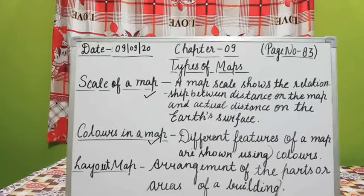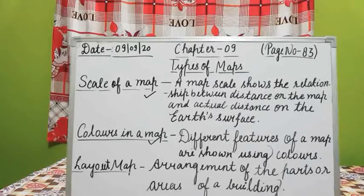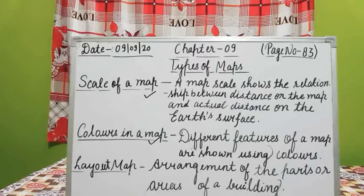See the sketch of Africa showing different physical features on the same page. This is a physical map. As I told you earlier, a physical map shows physical features of a place like mountains, rivers, plateaus, and other landforms.